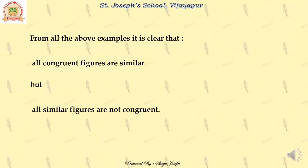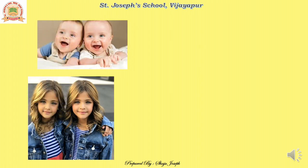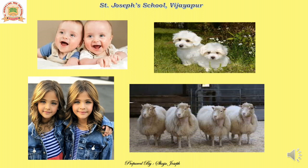Summing up all the different figures we discussed: all congruent figures are similar, but all similar figures are not congruent. Let us take some real-life examples. Here are some twins — they are exactly like one another, so they are like congruent figures. They are similar to look at, and also congruent. So congruency implies similarity, but similarity may not imply congruency. Taking examples of cloned animals — cloned sheep and cloned dogs — they are congruent and resemble each other perfectly, but they are also similar. The reverse may not be true.